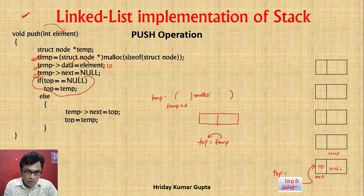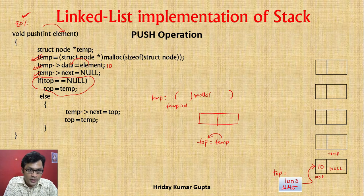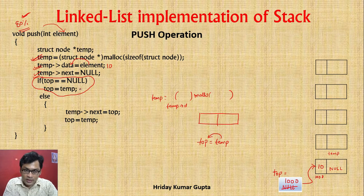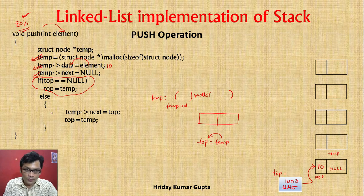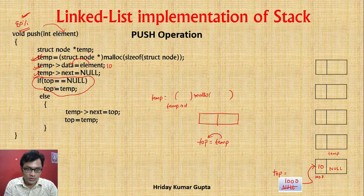This is the singly linked list — 80% code is common. Remember that if head is equal to null, then head is equal to temp. Remember that head is simply replaced by top here. This is the initial case.